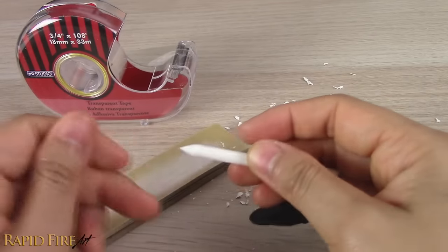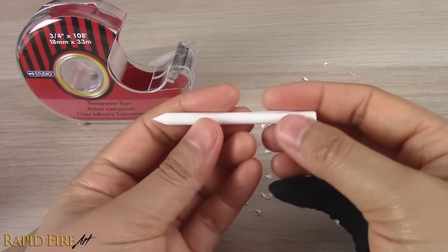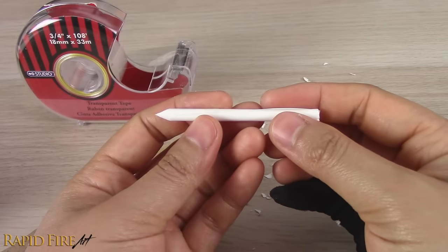A coarse sandpaper will chew the paper right up, creating a very bumpy, uneven surface, which we don't want.